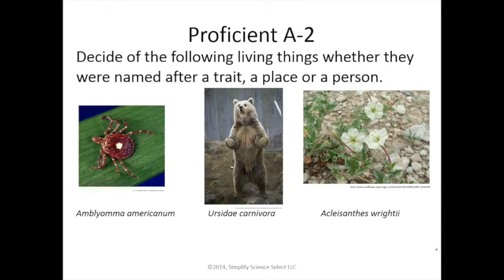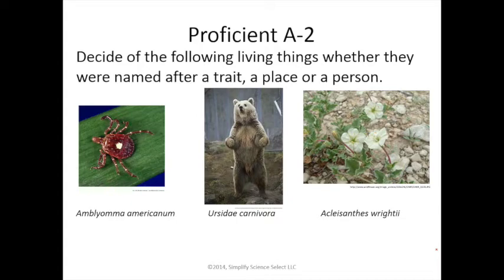Proficient question: decide whether the following living things were named after a trait, a place, or a person. First: Amblyoma americanum — that was probably named after a place. Americanum suggests this tick is some kind of North American tick. Second: Ursidae carnivora — probably named after a trait. Carnivora sounds like carnivore, a meat eater. Third: Ocleosanthes rightii — this Latin one is tough to pronounce, but it looks like it was named after a person. The discoverer was probably named Right, and to make it Latinized it became rightii.